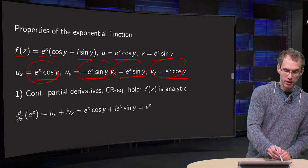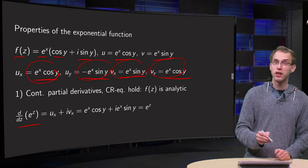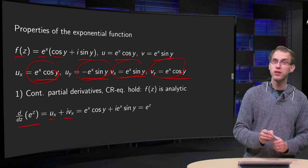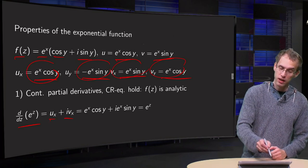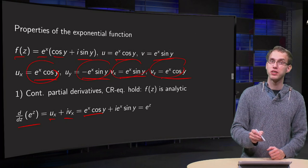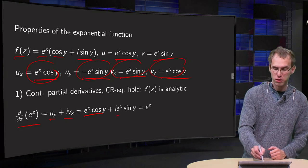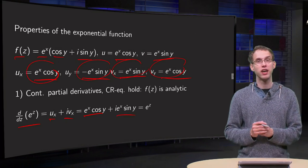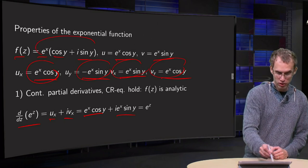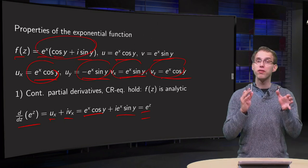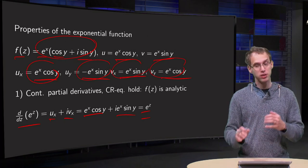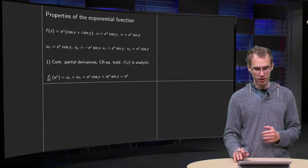We also know that d/dz of e^z is in that case u_x plus i times v_x, which equals e^x cos y + i e^x sin y, so we get back our original function. The derivative of the exponential function is the exponential function, just as in the real case.